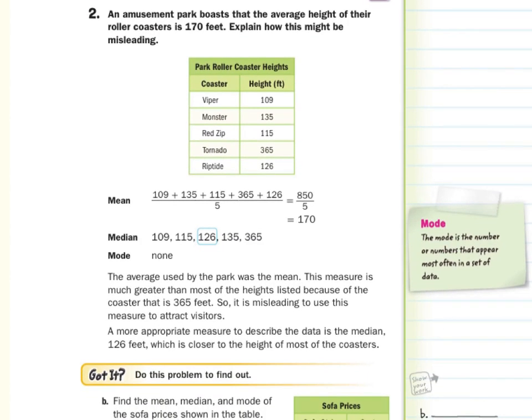The mean, add all the numbers up and divide by how many numbers you got, is 170. The median was 126. The mode, well there is no mode.